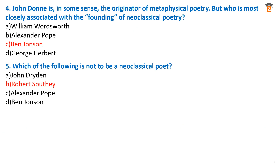Question number four: John Donne is in some sense the originator of metaphysical poetry, but who is most closely associated with the founding of the neoclassical poetry? The correct answer is option C — Ben Jonson. Ben Jonson was the English playwright and poet who popularized the comedy of humors. He wrote plays like Volpone, The Alchemist, Every Man in His Humour, and Every Man Out of His Humour, representing actual society, which is why he is closely associated with the founding of neoclassical poetry.